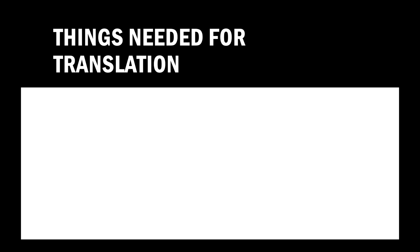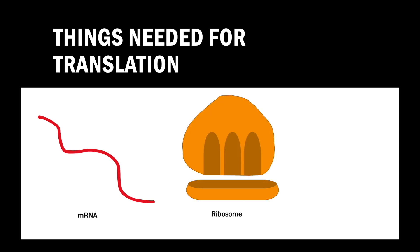Let's begin by looking at things needed for translation. We first need the mRNA. The mRNA carries the code from the coding strand of the gene. We then need the ribosome, which is made up from the association of rRNA and several proteins. We then need tRNA to carry the amino acid towards the ribosome.